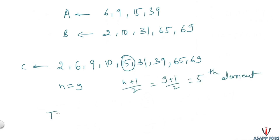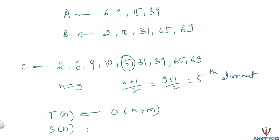If you think about the time complexity: we scanned both arrays A and B only once, so the time complexity is O(n+m). We are still creating a new array, so the space complexity remains O(n+m). This solution is far better than the previous one because we have optimized the time complexity.